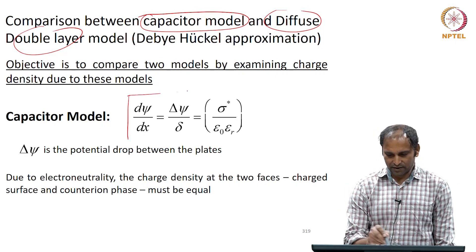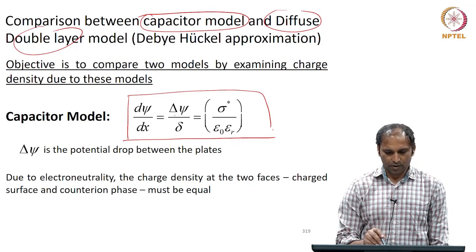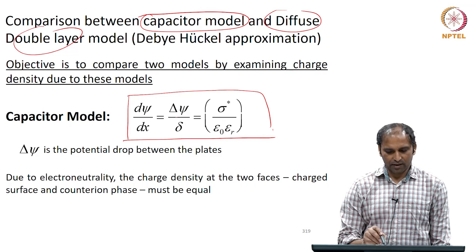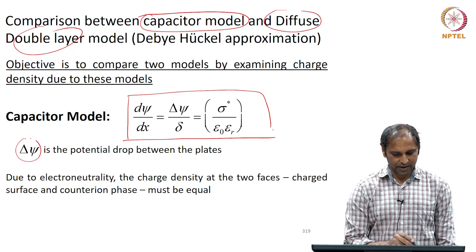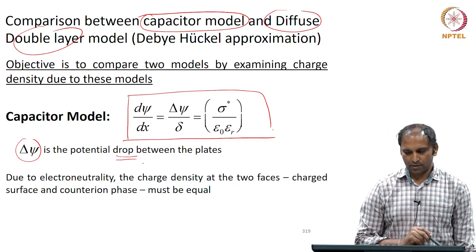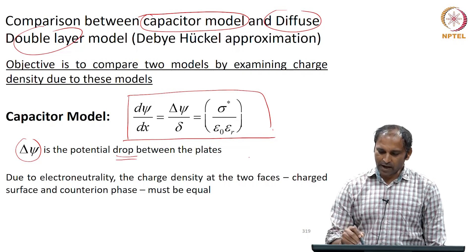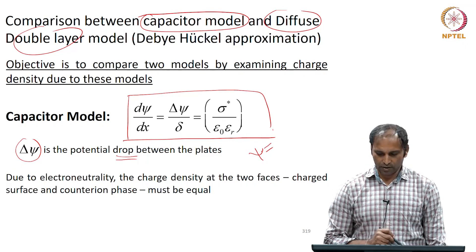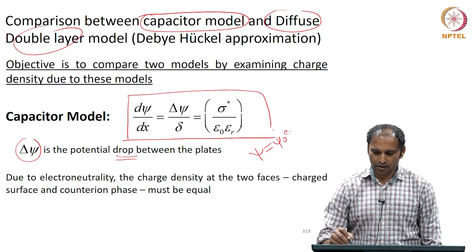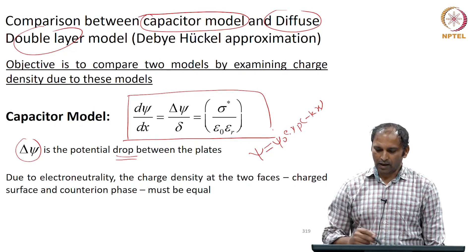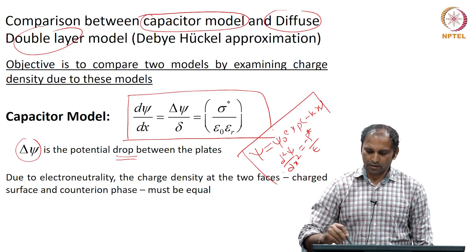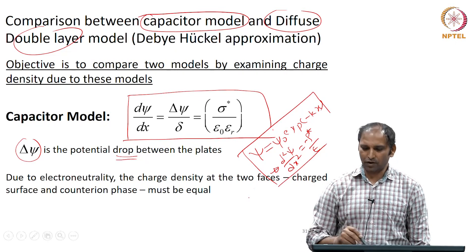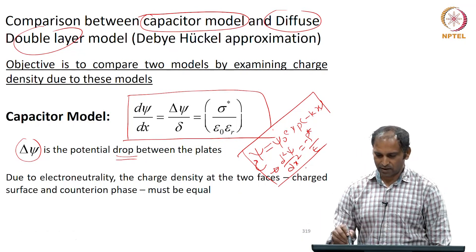This is what we had derived earlier: dψ/dx is equal to Δψ*/δ, which is equal to σ* divided by ε or εᵣ, where Δψ is the potential drop between the plates. And ψ equals ψ₀ exp(−κx), and d²ψ/dx² equals minus ρ*/ε. These are the basic equations we use for obtaining how the potential varies with separation distance.